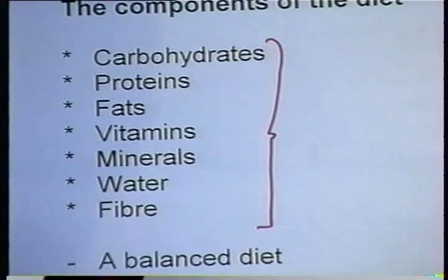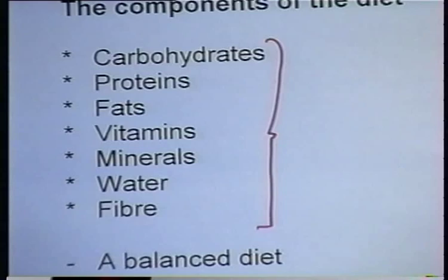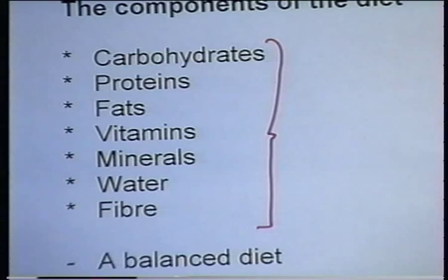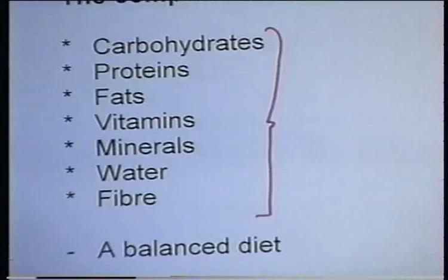A healthy diet must contain some of each of these; if not, the diet will be deficient in some way and the individual will be malnourished. Not only do people need all of these components in the diet, they also need them in the correct proportions — and this gives us the idea of a balanced diet.